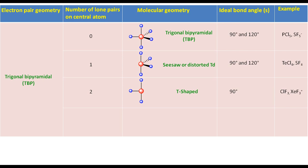For a molecule with trigonal bipyramidal electron pair geometry having three lone pairs on the central atom, we will put the lone pairs on the equatorial position because the number of electron pairs is odd. Ignoring the lone pairs will result in linear molecular geometry. The ideal bond angle is 180 degrees. I3-, ICl2-, and XeF2 are examples of this type of molecule.